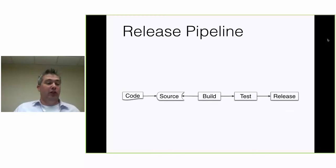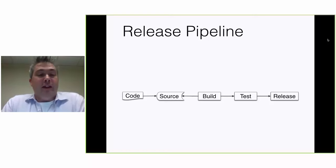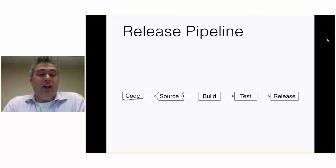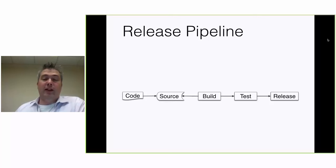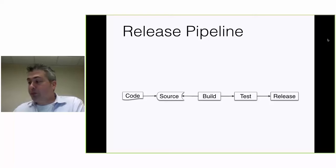So this is what a release pipeline looks like. You start out with your code. It gets checked into source control — Git, Mercurial, Subversion, or something like that — by developers. Then that software gets built and compiled. It gets tested. And then after it passes tests, it gets released and deployed out to customers.